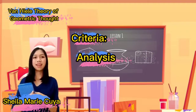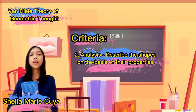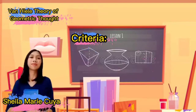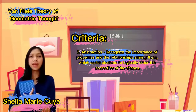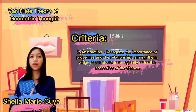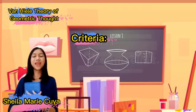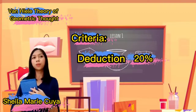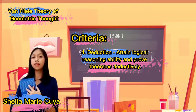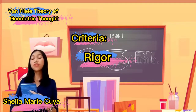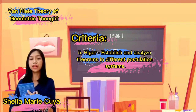The second criterion is analysis, also 20% — you should describe the shapes of your output on the basis of their properties. Third is abstraction, also 20% — you should recognize the importance of the properties and relationships of your art and logically order the properties of the shapes. Fourth is deduction, 20% — you should attain logical reasoning ability and prove theorems deductively. And the last is rigor, also 20% — you should be able to establish and analyze theorems in different postulation systems.